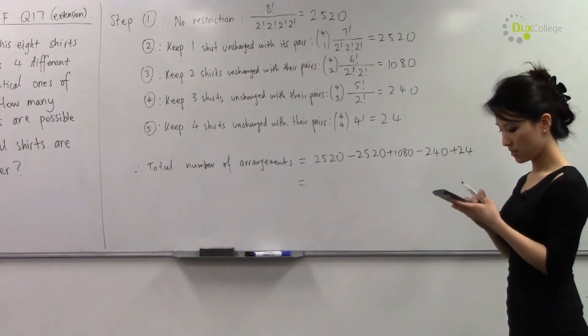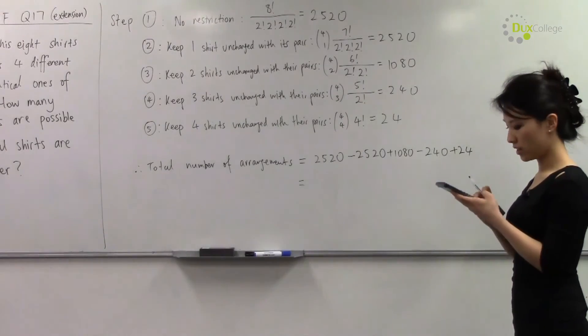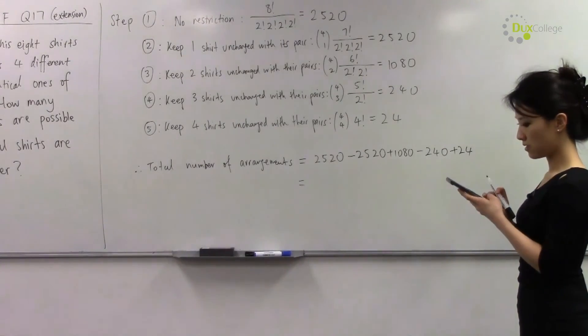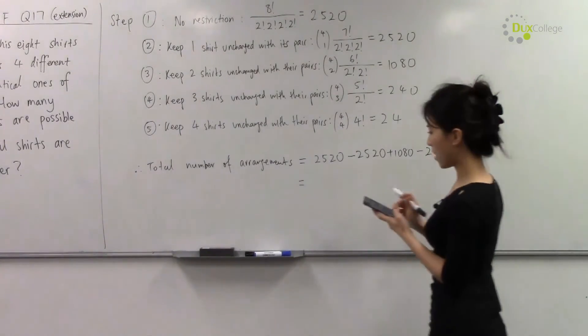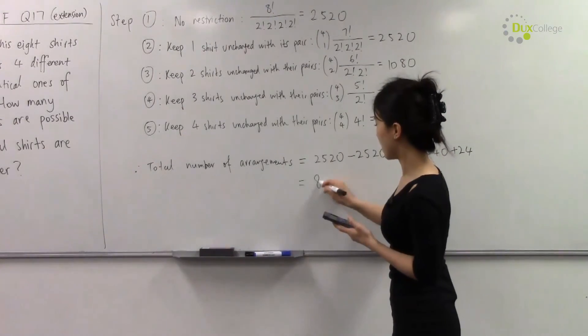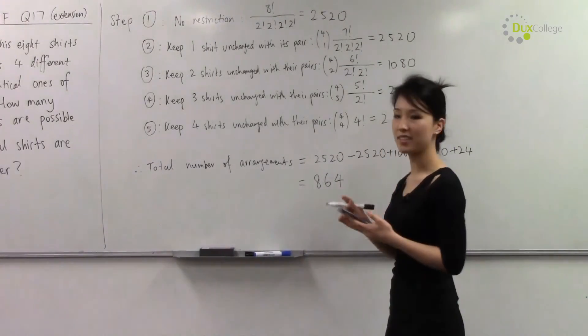So using this, doing this in our calculator, the final answer that we get is 864 ways.